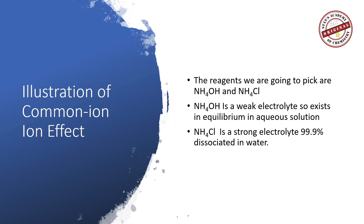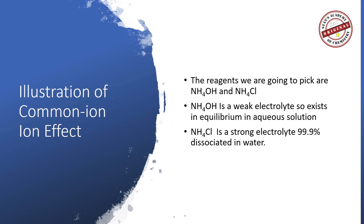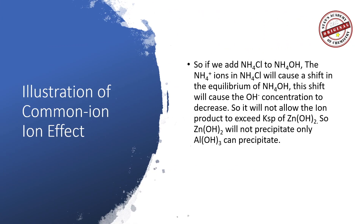Because ammonium hydroxide is a weak base, it does not dissociate completely. By adding ammonium chloride, which has a common ion (NH₄⁺) with ammonium hydroxide, we shift the equilibrium of NH₄OH to the left, decreasing the hydroxide ion concentration. This prevents the ion product of zinc hydroxide from exceeding its KSP, so zinc hydroxide will not precipitate. Only aluminum hydroxide will precipitate.